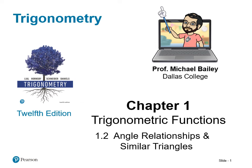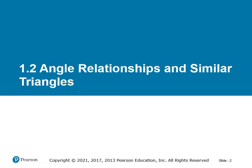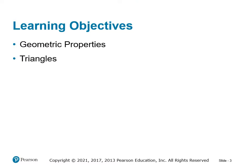Welcome to our second lecture in Trigonometry at Dallas College. I'm Professor Michael Bailey and this is 1.2 Angle Relationships and Similar Triangles. We're going to be learning about geometric properties and triangles.